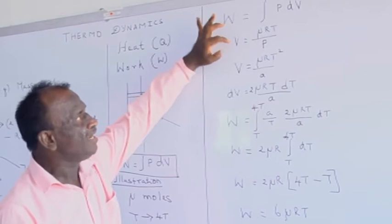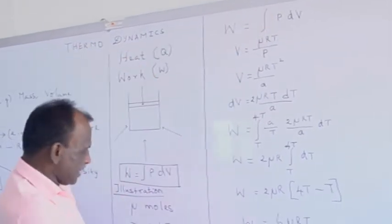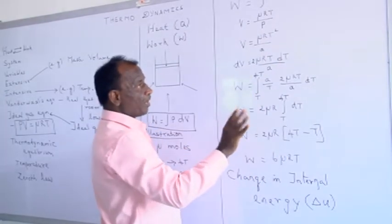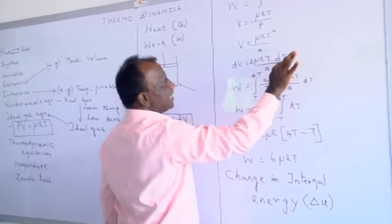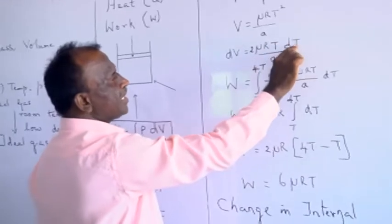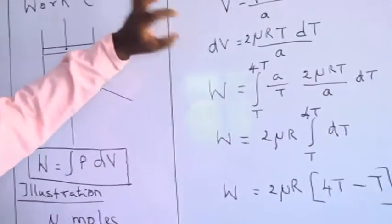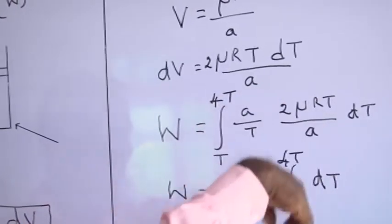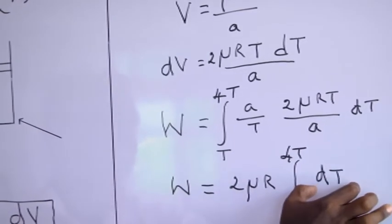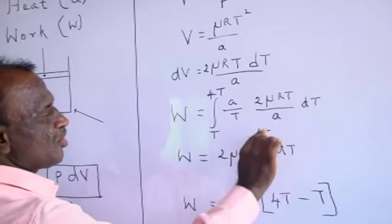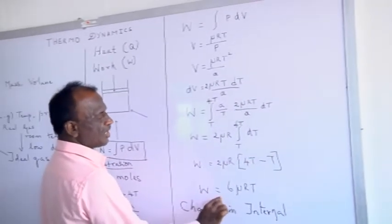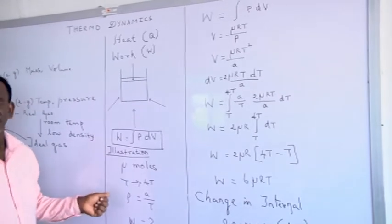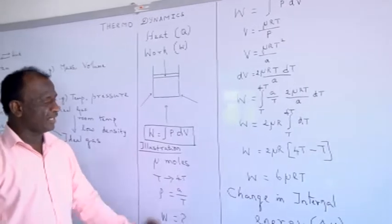From the ideal gas equation, V = μRT/P. Since pressure is given by P = A/T, substituting gives V = μRT²/A. Differentiating, dV = 2μRT dT/A. Substituting in place of dV, the limit of integration varies from T to 4T. After canceling A and T and taking constants outside, the only variable is temperature. Integrating from T to 4T gives W = 6μRT. This is the answer for the work done when μ moles are taken from temperature T to 4T while pressure is kept as P = A/T.